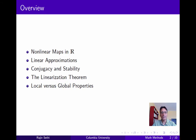Then we'll go back to a discussion of conjugacy and stability, and this will bring us to a discussion of higher dimensional systems in Euclidean space, for which we'll state the linearization theorem. And this tells us when and how we can use a linear approximation to examine the stability of fixed points in a non-linear system.